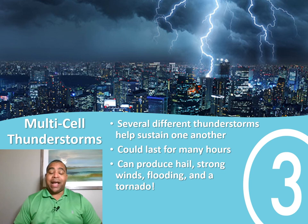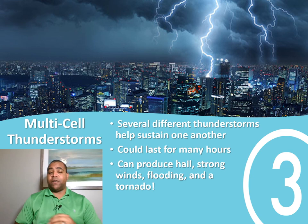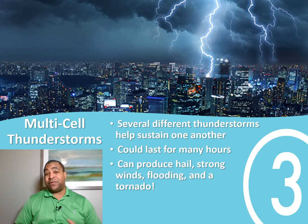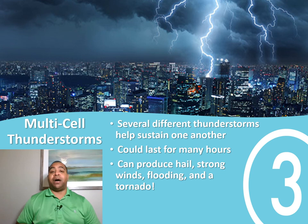Some of these multi-cell thunderstorms can produce hail along with strong winds and flash flooding — where literally in a couple of minutes you can go from no rain or flooding to lots and lots of water. They can also spawn off a tornado as well. Multi-cells can actually create tornadoes, and that's all because of the wind.